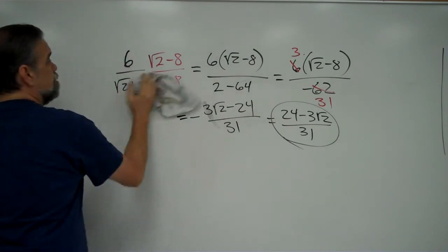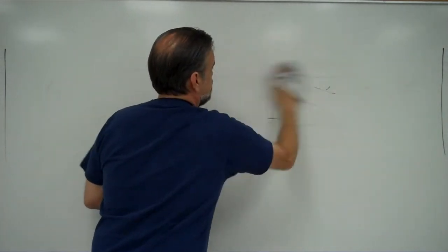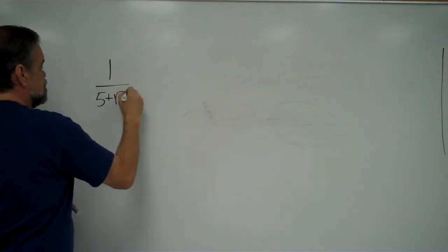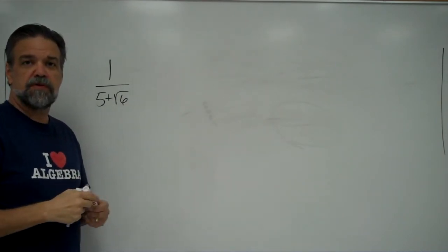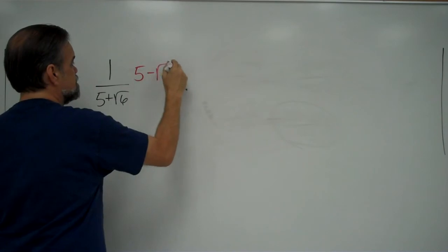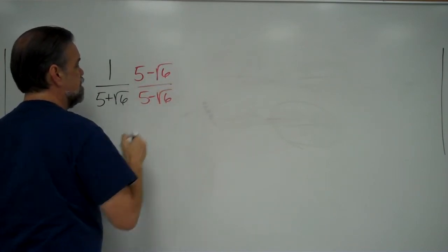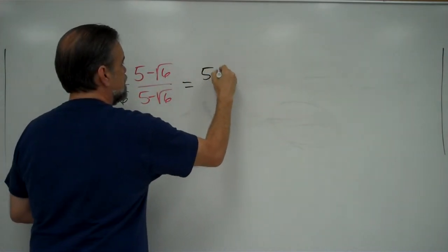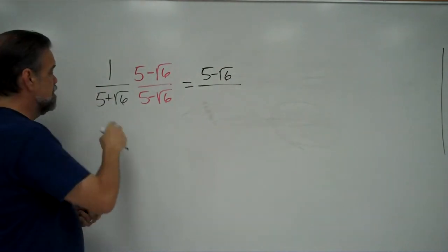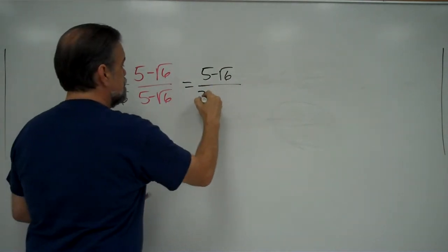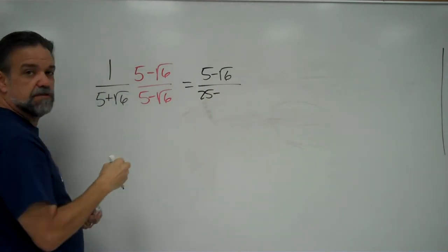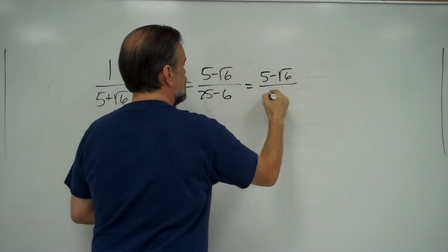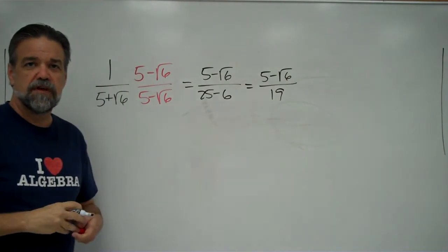Two more. Here's the first one: 1 over 5 plus the square root of 6. We multiply both numerator and denominator by 5 minus the square root of 6. In the numerator, 1 times something is just that thing: 5 minus the square root of 6. In the denominator, 5 squared is 25 minus the square root of 6 squared, which is 6, giving 19. So the answer is 5 minus the square root of 6 over 19.